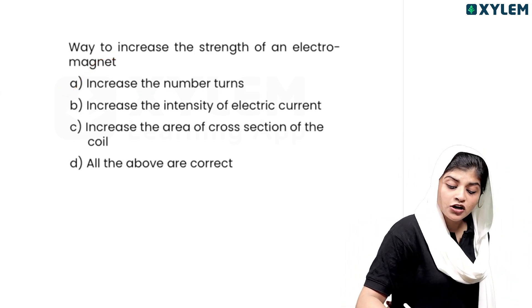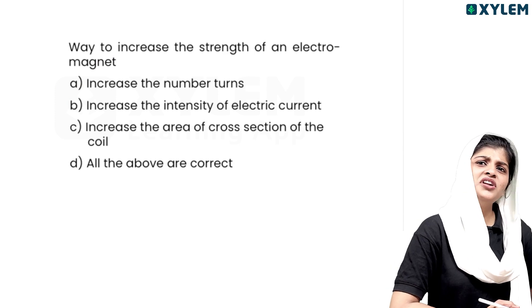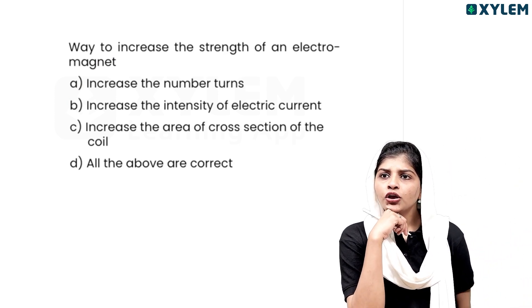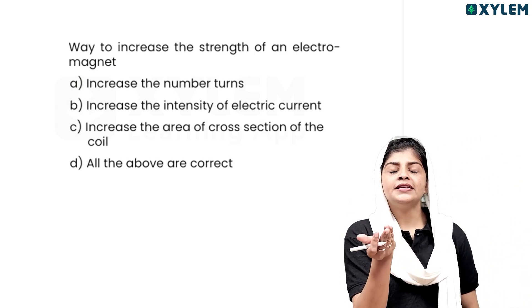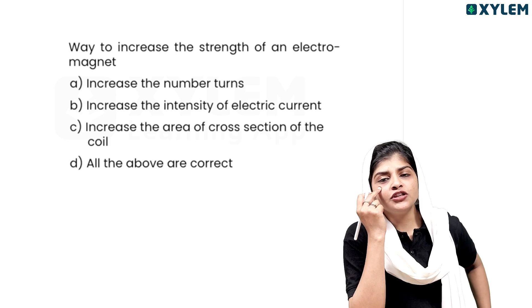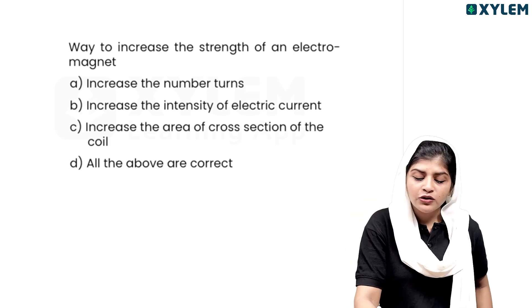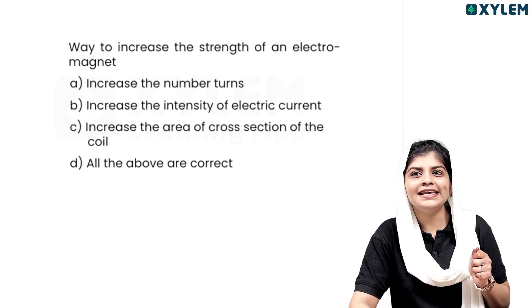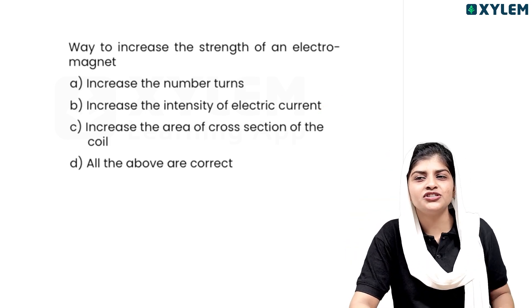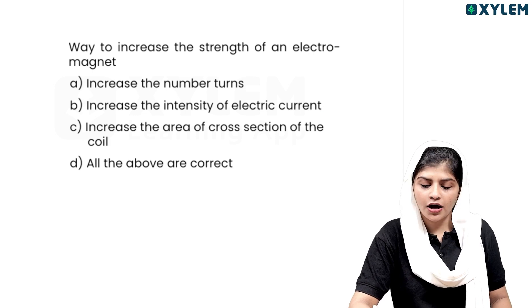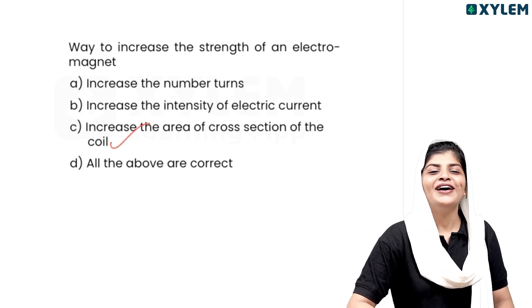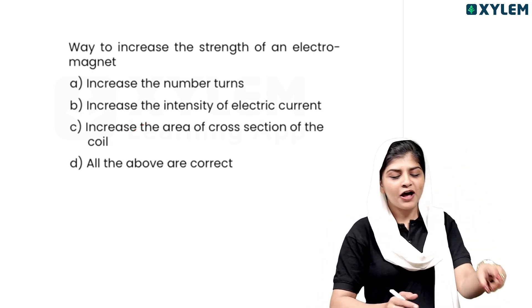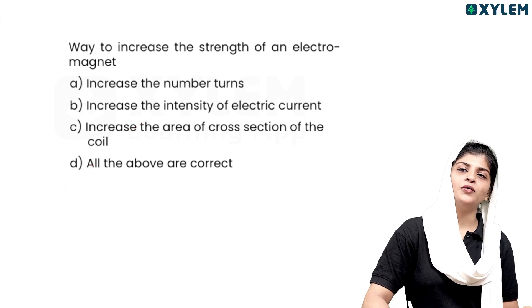The next option is to increase the intensity of current. We have learned about current. Next: increase the area of cross-section of the coil. Next option is all of the above.